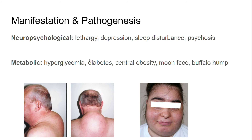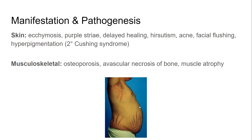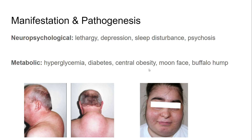The metabolic symptoms include hyperglycemia and diabetes, because cortisol increases blood glucose levels and increases insulin resistance — for these reasons, cortisol is called diabetogenic. We also see central obesity, moon face, and buffalo hump. Cortisol stimulates lipolysis, and the resulting free fatty acids relocate to the central part of the body, causing abdominal obesity. Moon face refers to swelling of the face due to fat buildup, which can be seen in the pictures here. Buffalo hump refers to fat mass on the back of the shoulders, also caused by free fatty acid deposits.